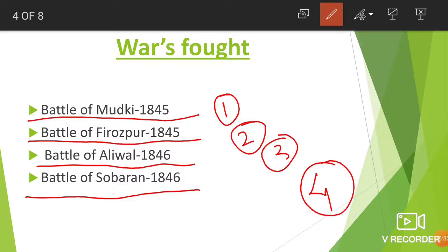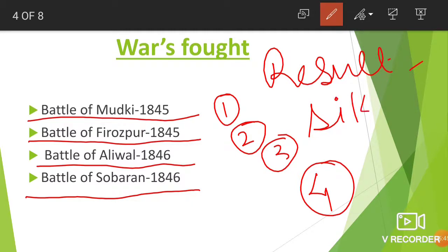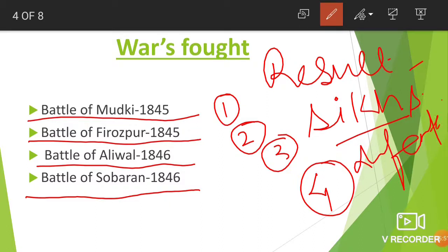The result of the First Anglo-Sikh War was that the Sikhs were defeated. The Britishers won the battles, pressurized the other group to sign a treaty, and as a result the Treaty of Lahore was signed between the Sikh Empire and the Britishers.